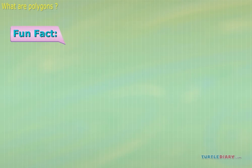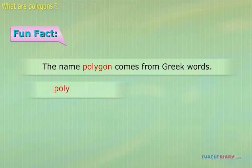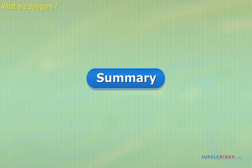Fun Fact: The name Polygon comes from Greek words. Poly means many, and gon means angles. Thus, a polygon has many angles. Let's see what you have learned in this lesson.